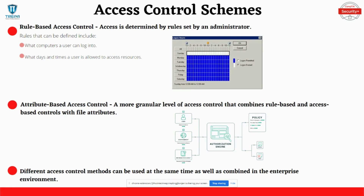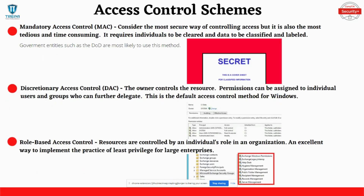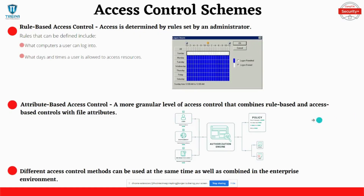An important thing to know is that all these access control methods can be used simultaneously on the network. Most enterprises will implement most of these depending on what access permissions need to be set and how large the enterprise is. In the government, we typically use all of them, with discretionary access control sometimes omitted depending on the scenario.